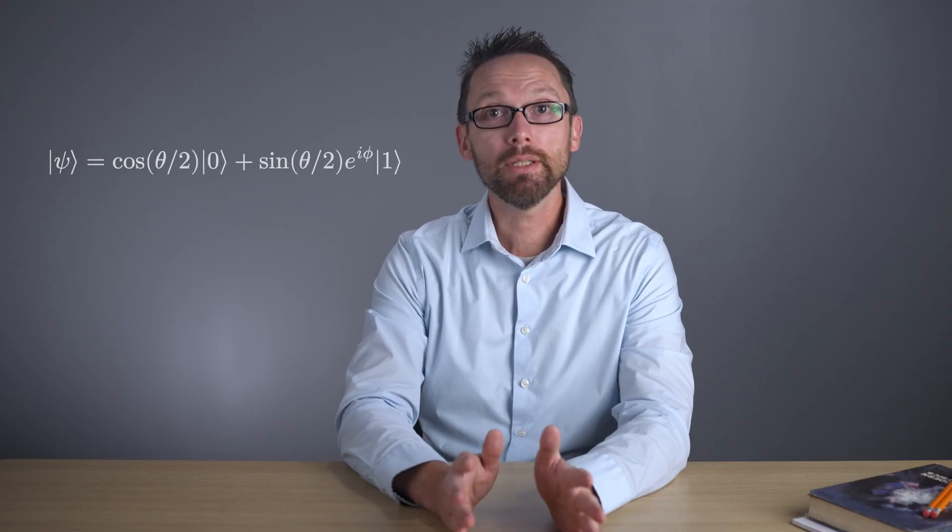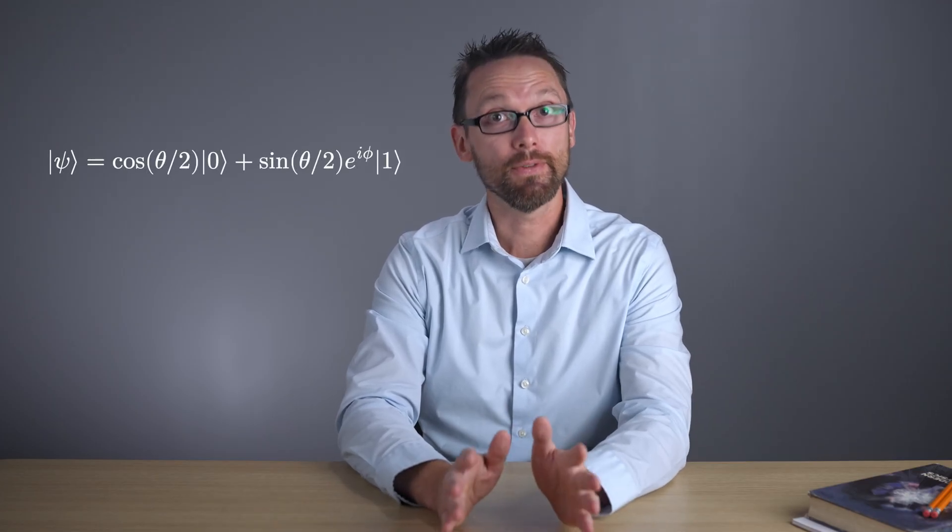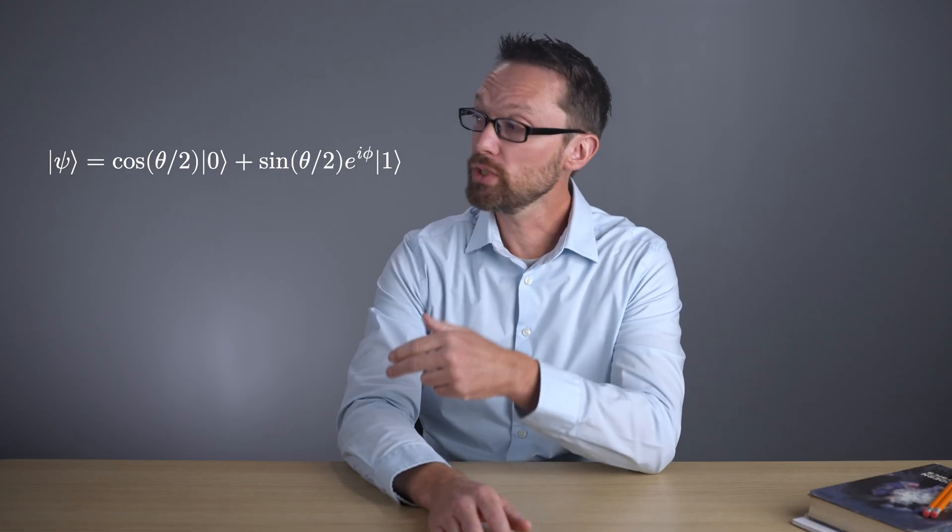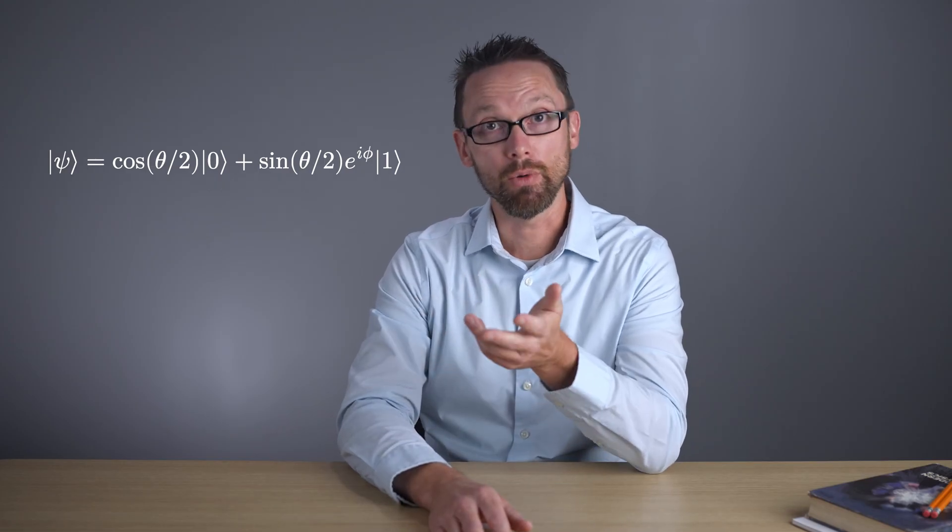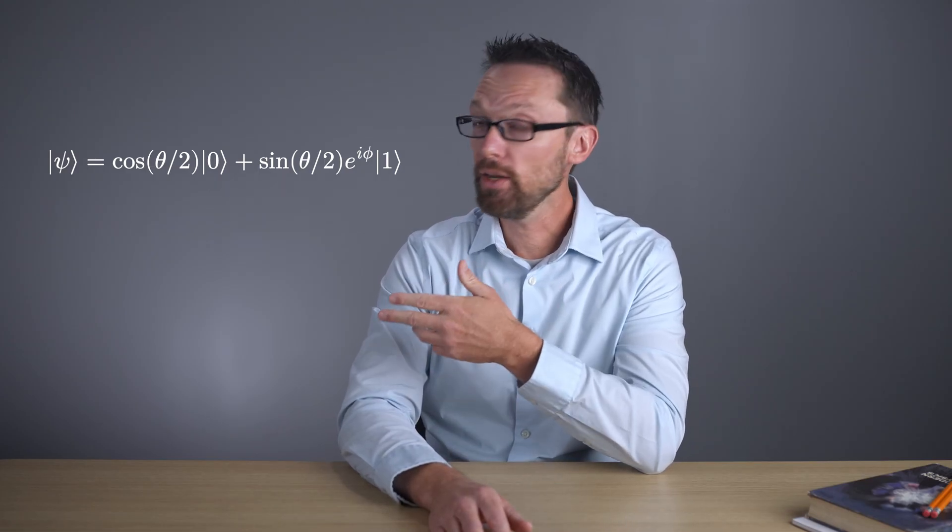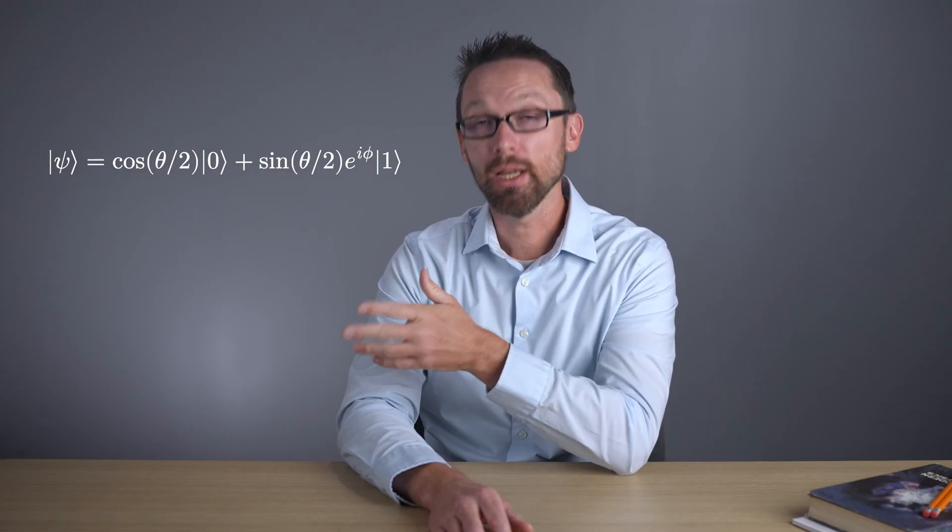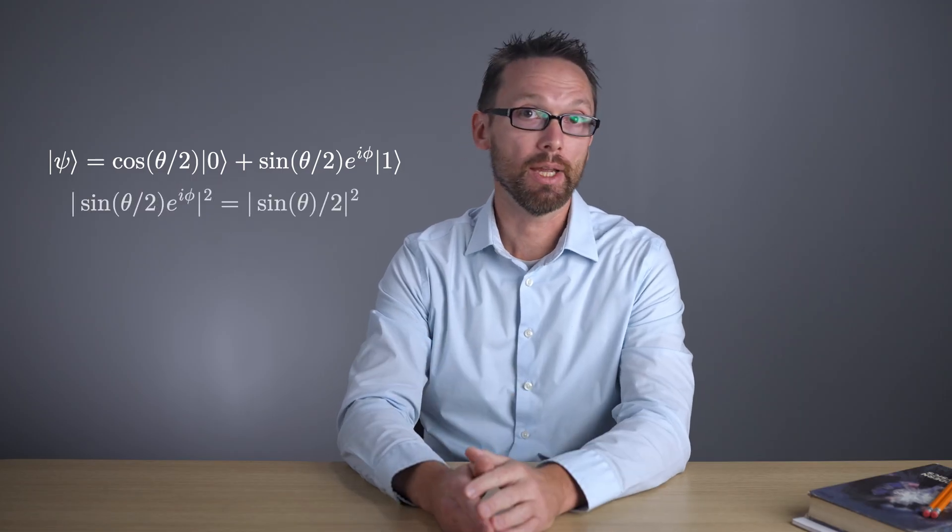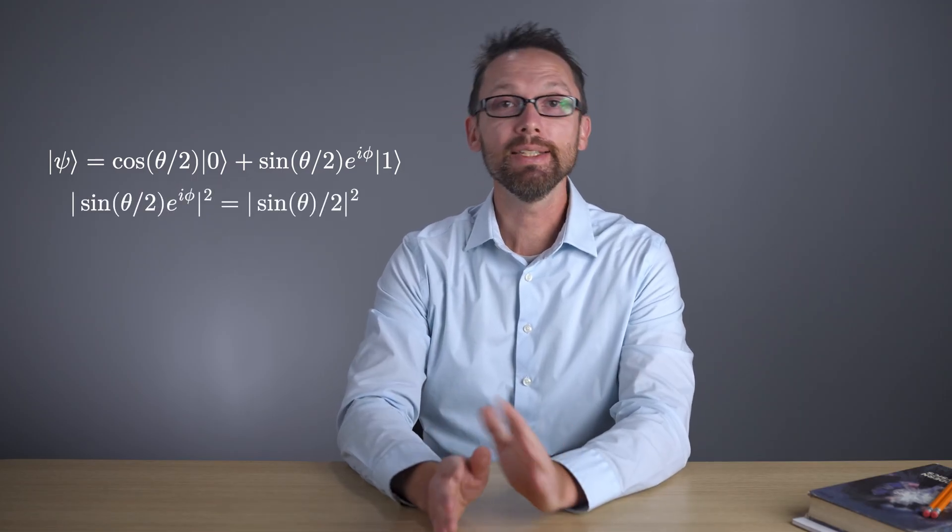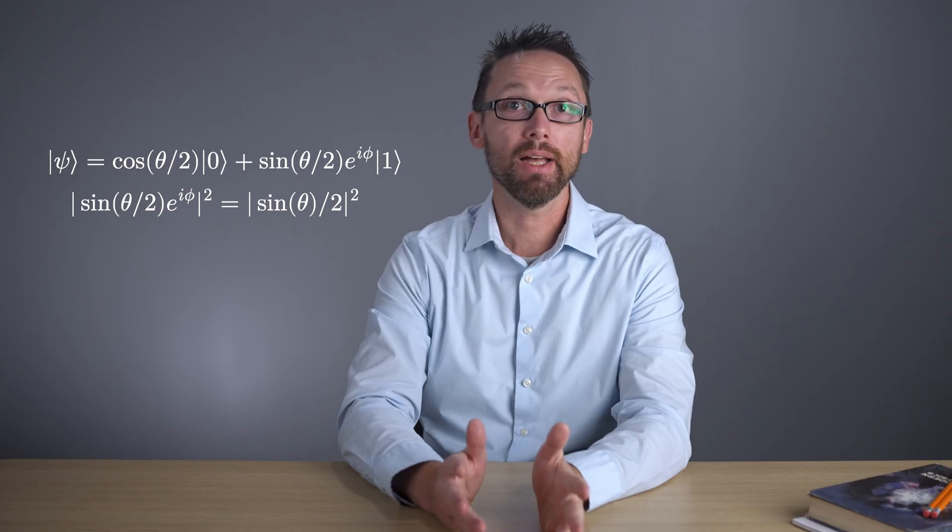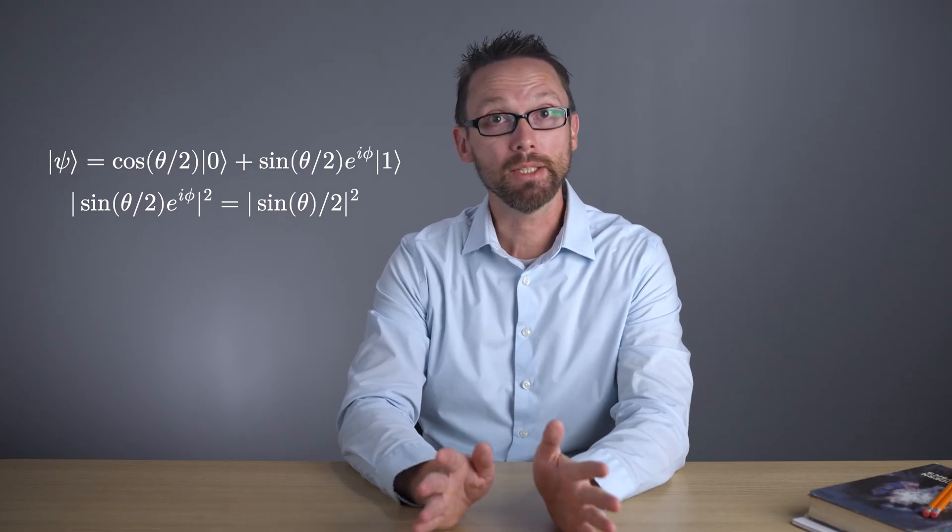We can write the state including this relative phase phi as cosine of theta over two times the state zero plus sine theta over two times this imaginary exponential e to the i phi times the state one. We're free to add this imaginary exponential to our expression since it doesn't change the absolute value of that second term, so the measurement probabilities are not affected.